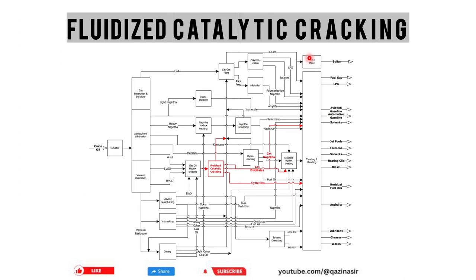Looking at the full refinery picture, we have crude oil coming in, going through atmospheric distillation and vacuum distillation, and then through various processing units. The fluidized catalytic cracking unit is the heart of the refinery. All the raw gas oil from the refinery is transferred to the FCC unit, where heavy hydrocarbons are broken down into more useful products that are then sent to blending or further downstream processing.